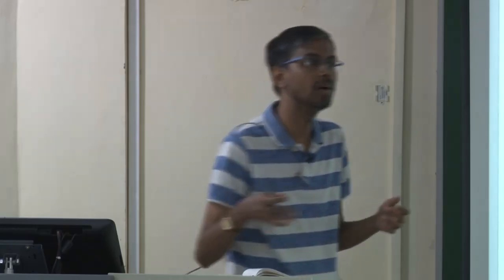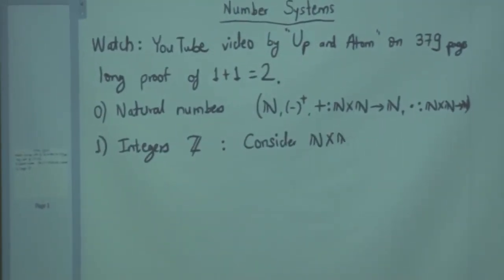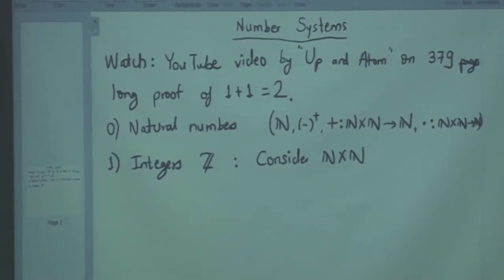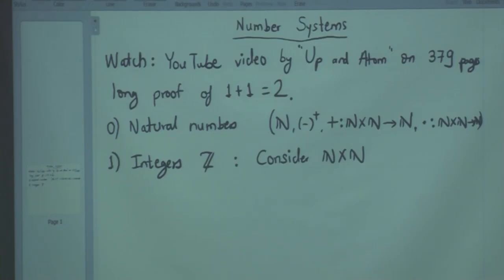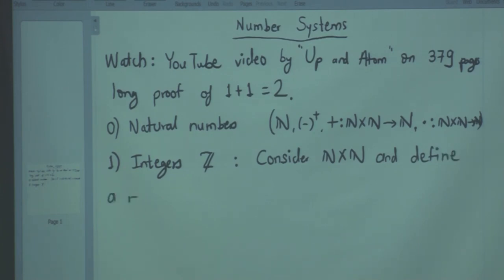However, now that we are learning set theory, we should formalize this process. Consider ℕ×ℕ — we are going to cheat. We only know how to add, and we are going to use addition to describe subtraction. ℕ×ℕ is the collection of ordered pairs of natural numbers. Define a relation tilde on this set.